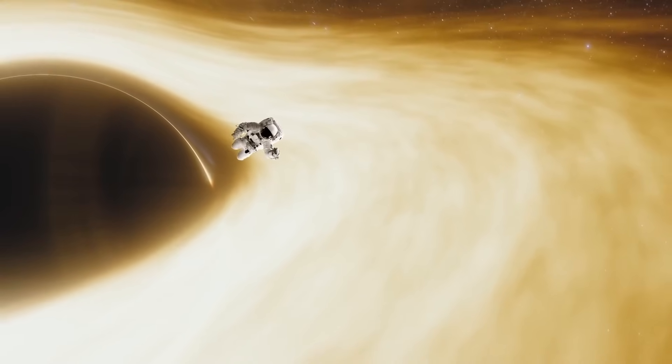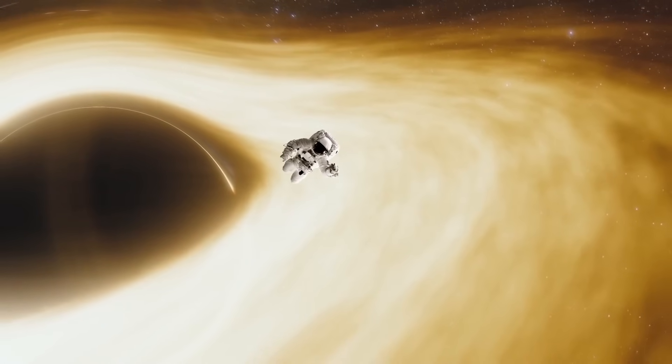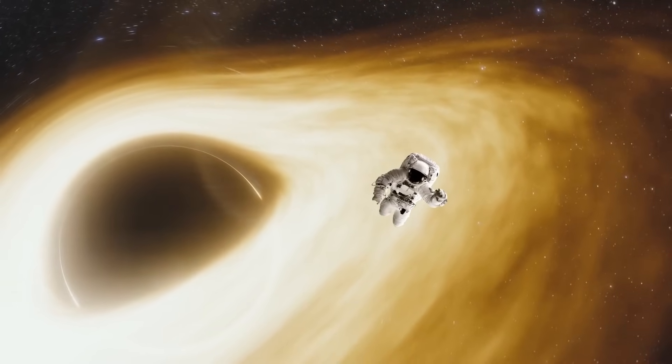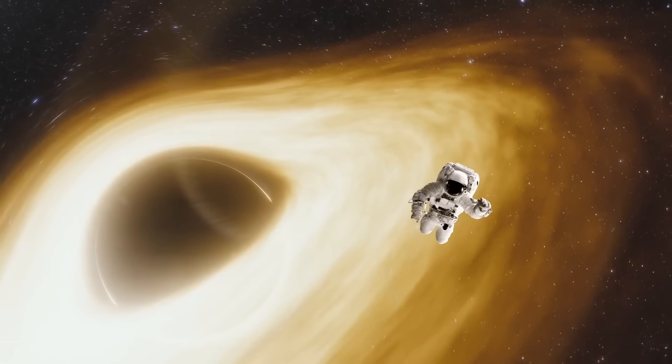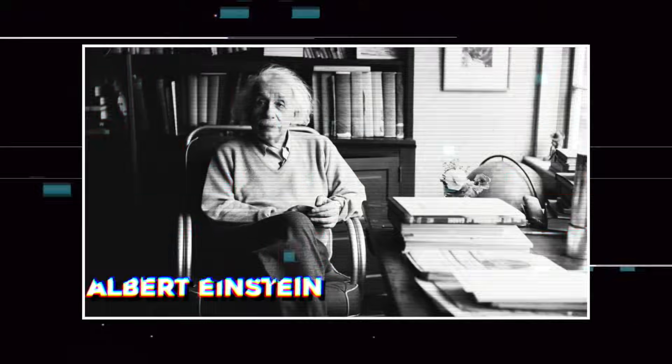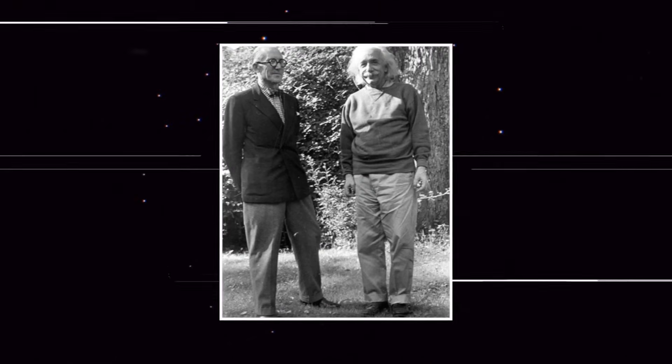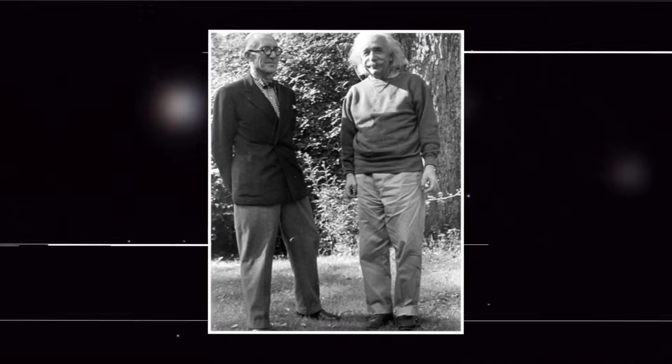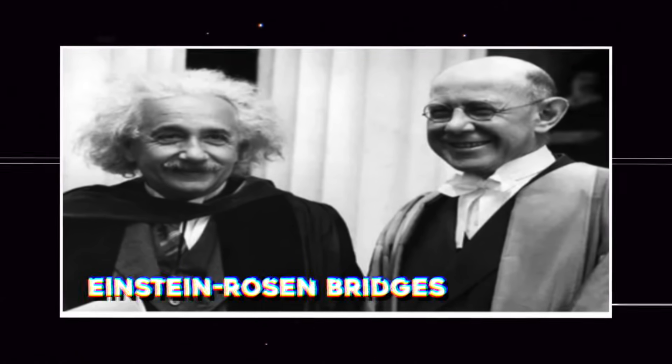This seems to be in stark contrast to a black hole, which is less of a tunnel and more of a meat grinder. However, some physicists claim that both black holes and wormholes share many of the same characteristics. Albert Einstein, along with Nathan Rosen, discovered the simplest possible wormhole solution in 1935, which is why wormholes are sometimes called Einstein-Rosen bridges.